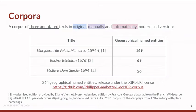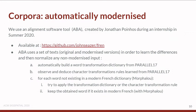The automatically modernized version is the result of an alignment software created by Jonathan Ponos during his internship. The system uses an original version and its modernized counterpart in order to learn the differences and then modernize new text if necessary. It will first create a word transformation dictionary from parallel data, and then create character transformation rules learned from the same corpus.